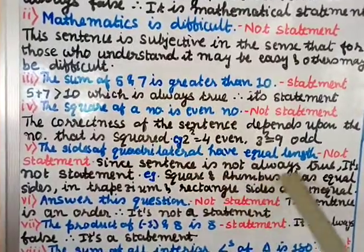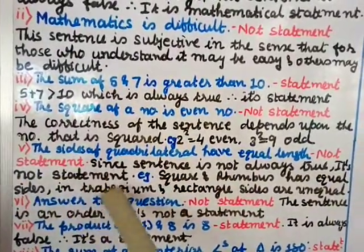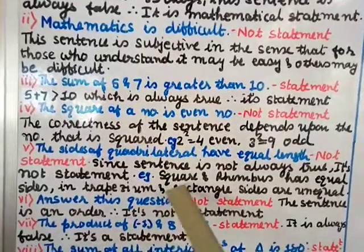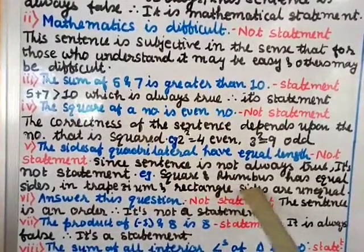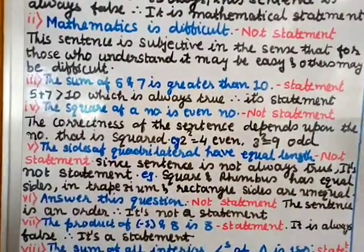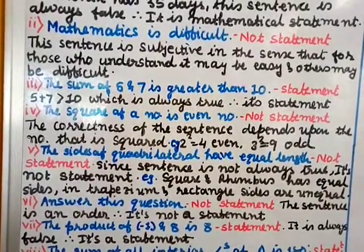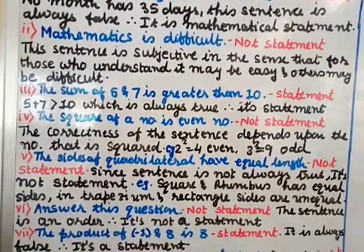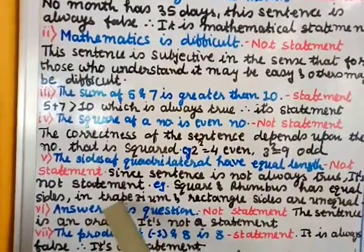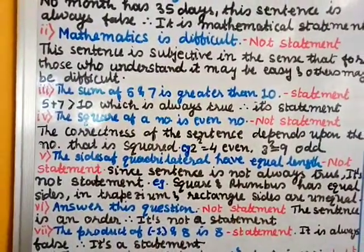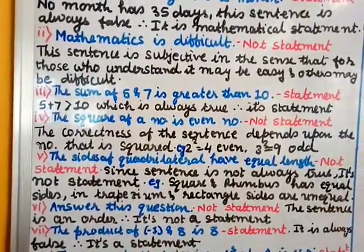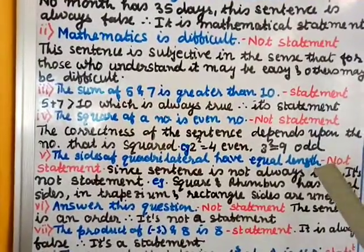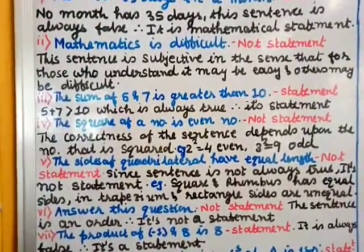Roman numeral five: 'The sides of a quadrilateral have equal length' — not a statement, since this sentence is not always true. For example, a square and a rhombus have all four sides equal, so for those it is true. But if you take a trapezium or a rectangle, the four sides are not equal. So for some quadrilaterals it is true and for others it is false, therefore this given sentence is not a statement.